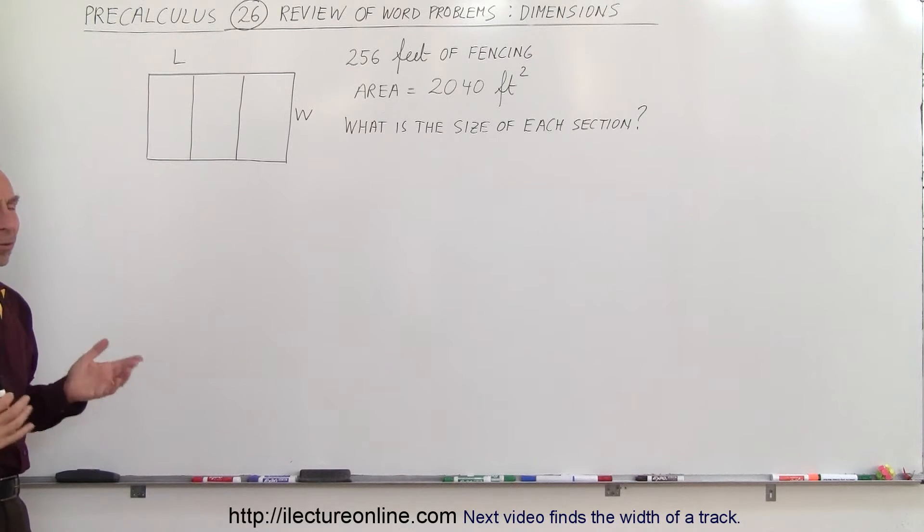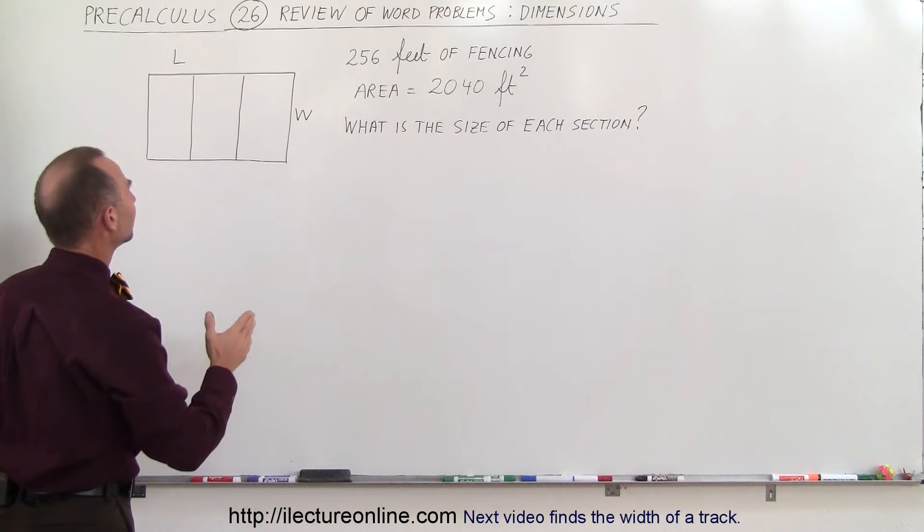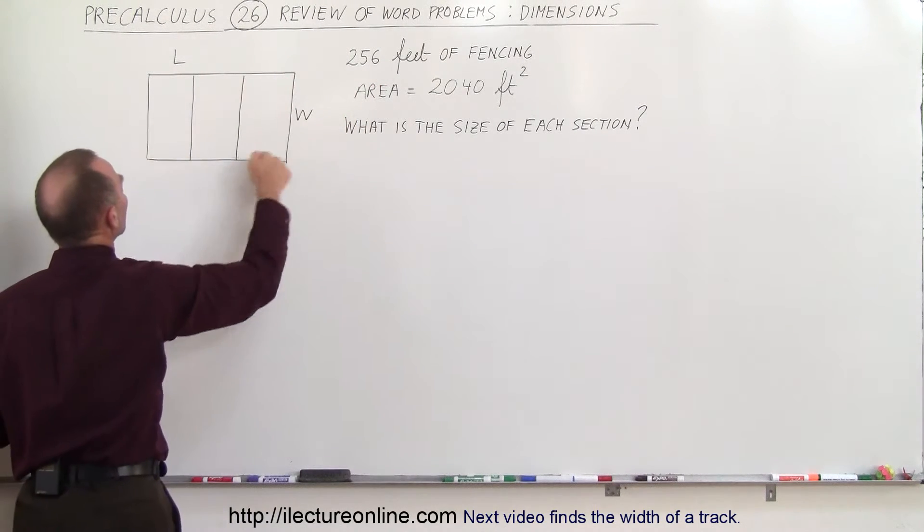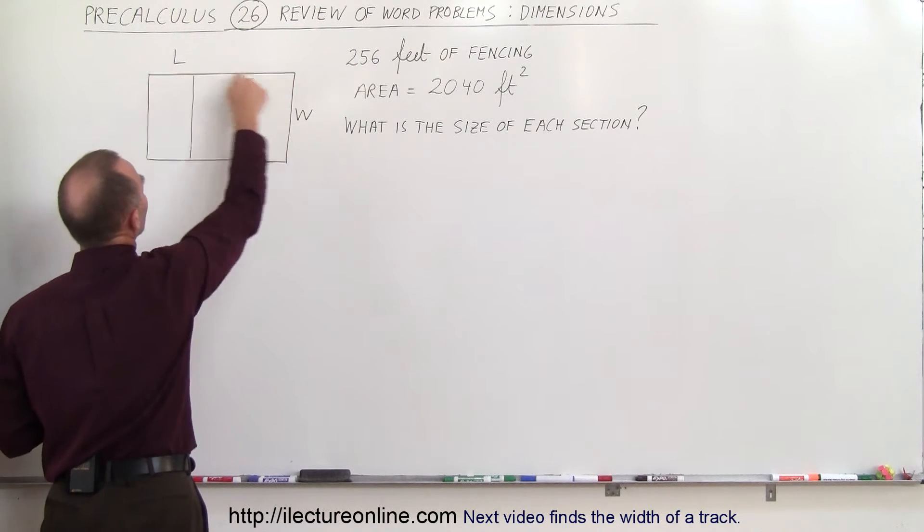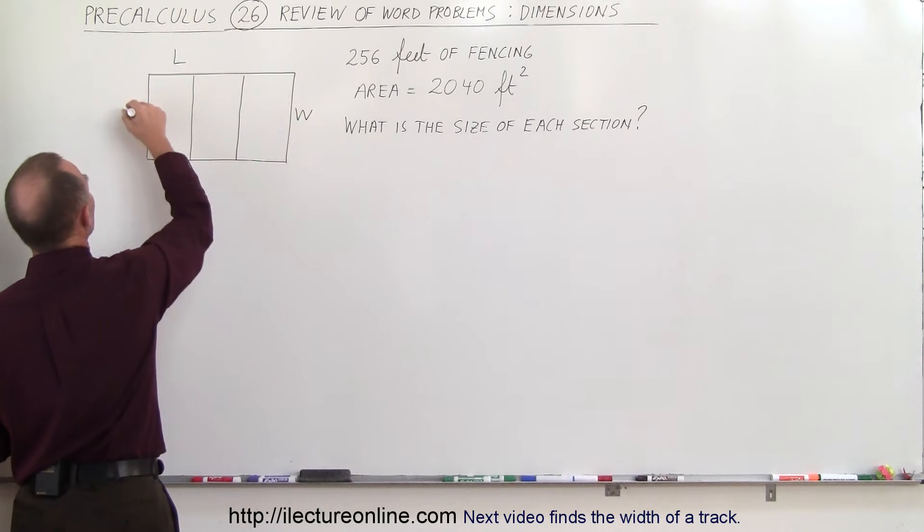How do we go about doing that? Well first of all we want to be able to set equal to the total length of fencing, the total amount of dimensions here that we're using for that. Notice that if this is the width of the plot and this is the length of the plot, we have the length up here, we have the length down here, and we have four